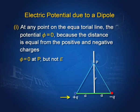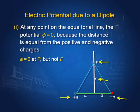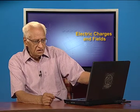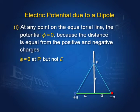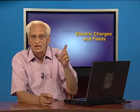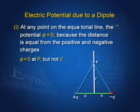This is a dipole with +q and -q, and p is a point on the equatorial line at a distance r from the center of the dipole. We find the potential at p due to +q, which is q divided by this distance, and the potential due to -q is minus q divided by this distance. Since these two distances are equal and the charges are opposite, the potential at p is equal to 0. But the electric field at p, as found in the last lecture, is not equal to 0.